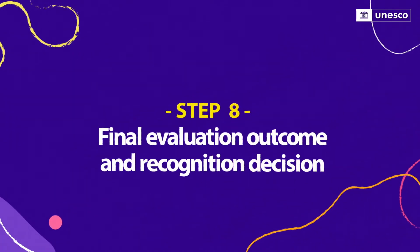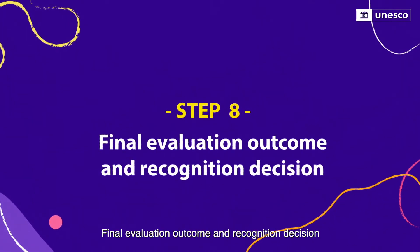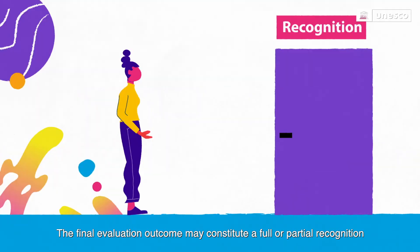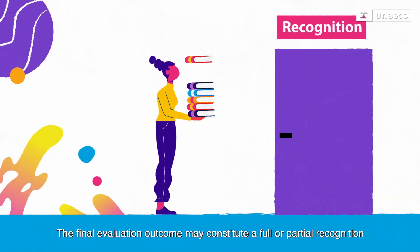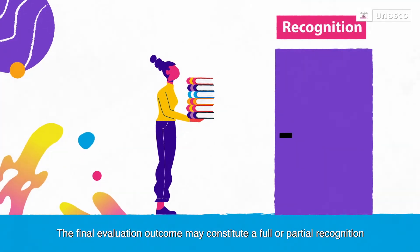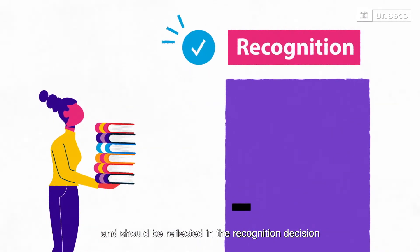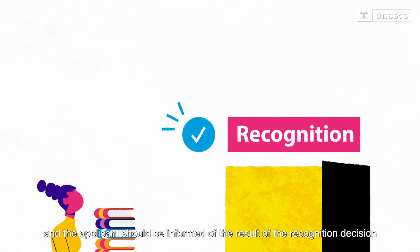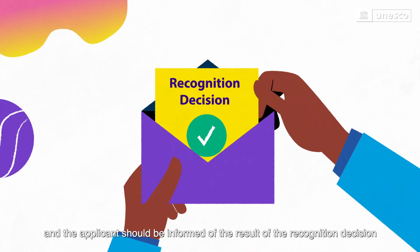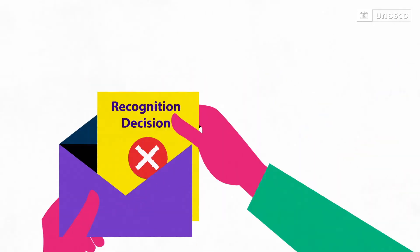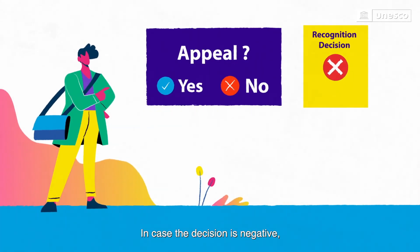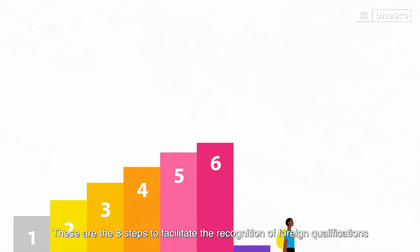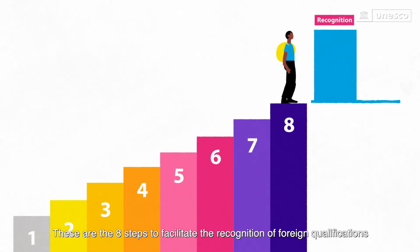Step 8: Final Evaluation Outcome in Recognition Decision. The final evaluation outcome may constitute a full or partial recognition and should be reflected in the recognition decision, and the applicant should be informed of the result. In case the decision is negative, the applicant has the right to appeal. These are the eight steps to facilitate the recognition of foreign qualifications.